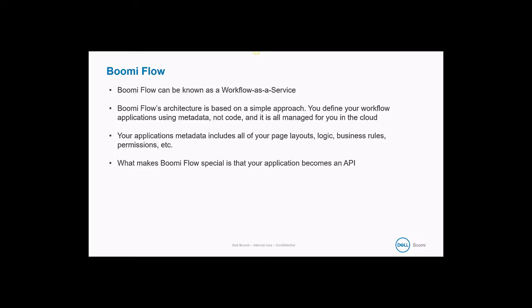What makes Boomi Flow special is that your application becomes an API. This approach radically simplifies cross-device architectures while also ensuring your applications are device revolution ready. Rather than building a whole new app for each and every device hitting the market, you simply create it once. If the responsive design in our standard player isn't enough, you can simply adapt it to make the most of a particular device. Your applications themselves are all APIs — you can hook them into text-to-speech technology like Twilio and do things like calling your application on the phone and having it talk to you.